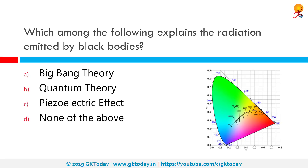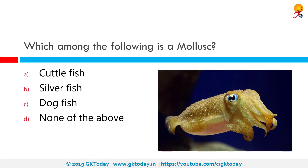Which among the following explains the radiation emitted by black bodies? Correct answer is quantum theory. All normal matter emits electromagnetic radiation when it has a temperature above absolute zero. The radiation represents a conversion of a body's internal energy into electromagnetic energy and is therefore called thermal radiation. Which among the following is a mollusk? Correct answer is cuttlefish. Cuttlefish or cuttles are marine mollusks of the order Sepiida. They belong to the class Cephalopoda, which also includes squid, octopuses, and nautiluses. Cuttlefish have a unique internal shell called the cuttlebone.